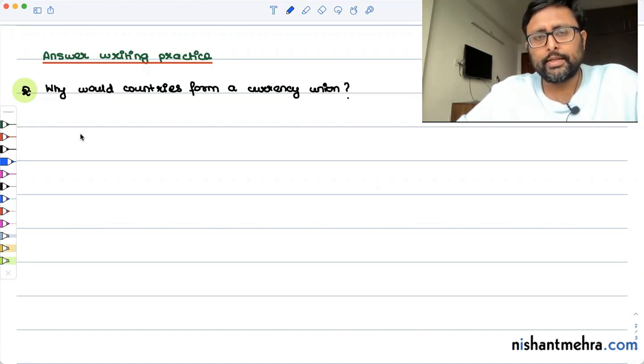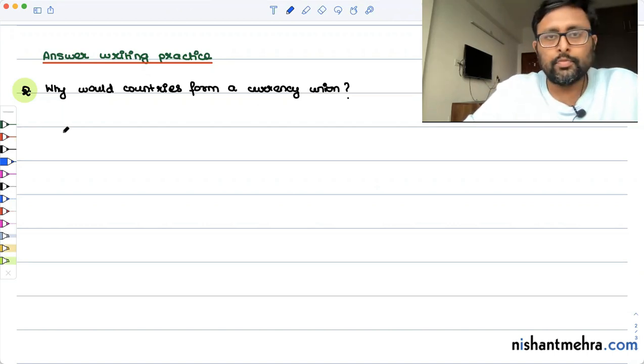It's a five marker, let's say, and you have to answer this in around 200 words. So why would countries form a currency union?